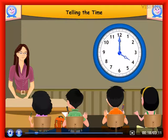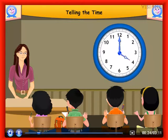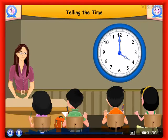On this clock, the long hand is at 12 and the short hand is at 4. So, the time is 4 o'clock or 4. We know that 60 minutes is equal to 1 hour.